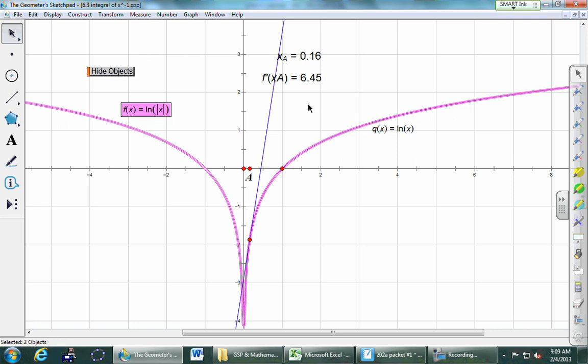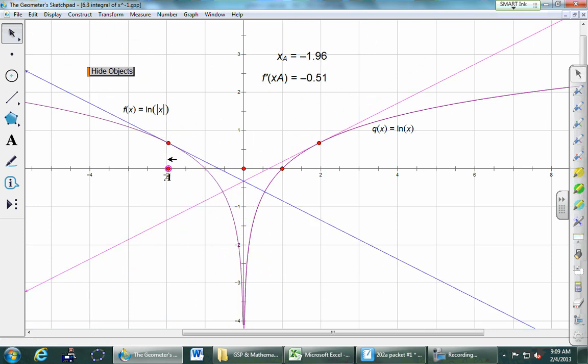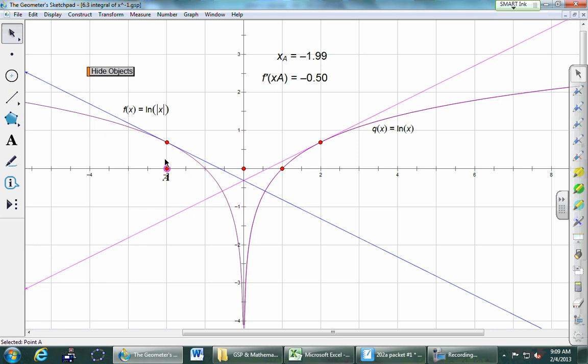So we haven't ever studied this graph. We never had reason to. We were fine with ln only existing for positive numbers. But if I decided to slap an absolute value in there, then I have twice as much graph. But what if we think about the tangent lines, like the slope of a tangent line out there? What if I were sitting at negative two? What do you guys think the slope of that tangent line is?